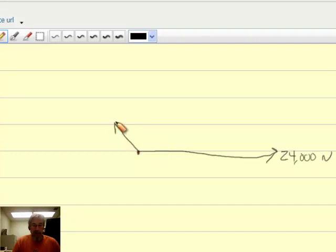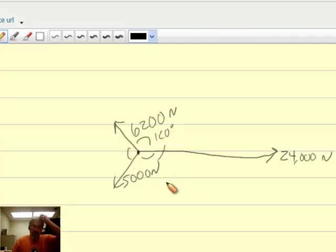And then 120 degrees from that, I have this 6,200 newton vector. That's the snowmobile. And then from there, 120 degrees between the two of them, I've got the 5,000 newton force from the ATV. So all of these angles are 120 degrees in all cases, and the vectors are shown there.